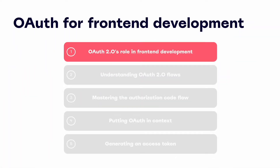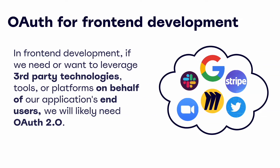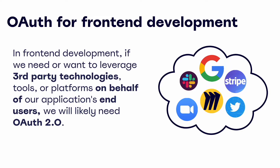So what exactly is OAuth and why does it matter when it comes to front-end development? OAuth is the industry standard protocol for authorization when it comes to making REST API calls, and OAuth 2.0 is the latest generation of this authorization method. If we want to bring external or third-party technologies into any of our applications on behalf of our app's end users, we'll need a way to be granted this permission — and this is exactly where OAuth 2.0 comes in.